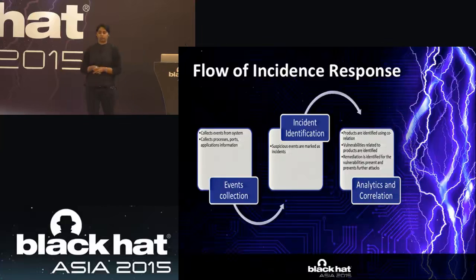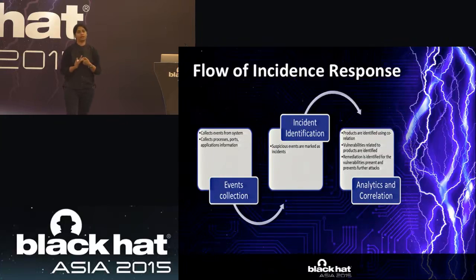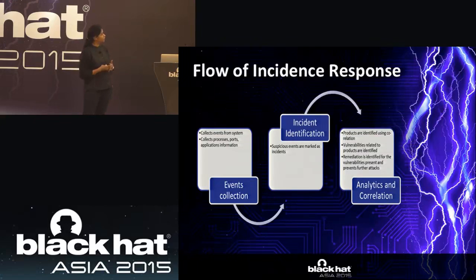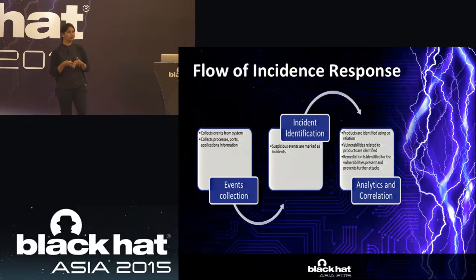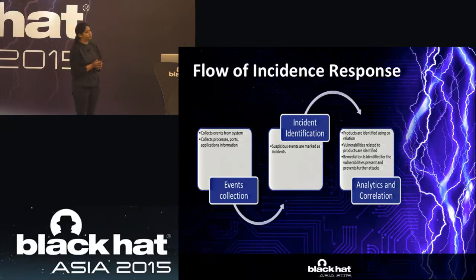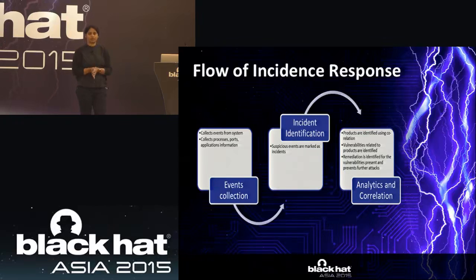The flow of incident response: you collect all the data and events that are happening — ports, processes, files, registries. Not all events are important; millions happen. In incident identification, any suspicious activity is flagged because the administrator has written rules or recognizes unusual behavior — like a strange EXE starting to run. You feed it to the analytics and correlation engine, determine if the product is vulnerable, find the remediation, fix it, and prevent further attacks.